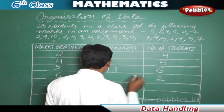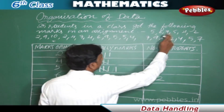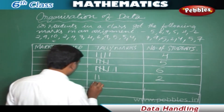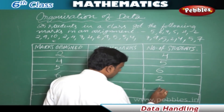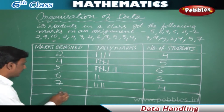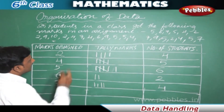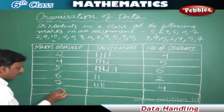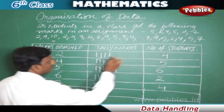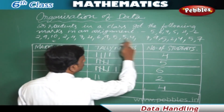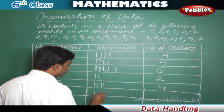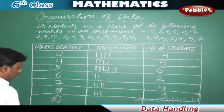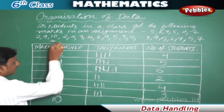Seven marks: four students got seven marks. Eight marks: no one got eight marks. Nine marks: three students got nine marks. Ten marks: only one student got ten marks.